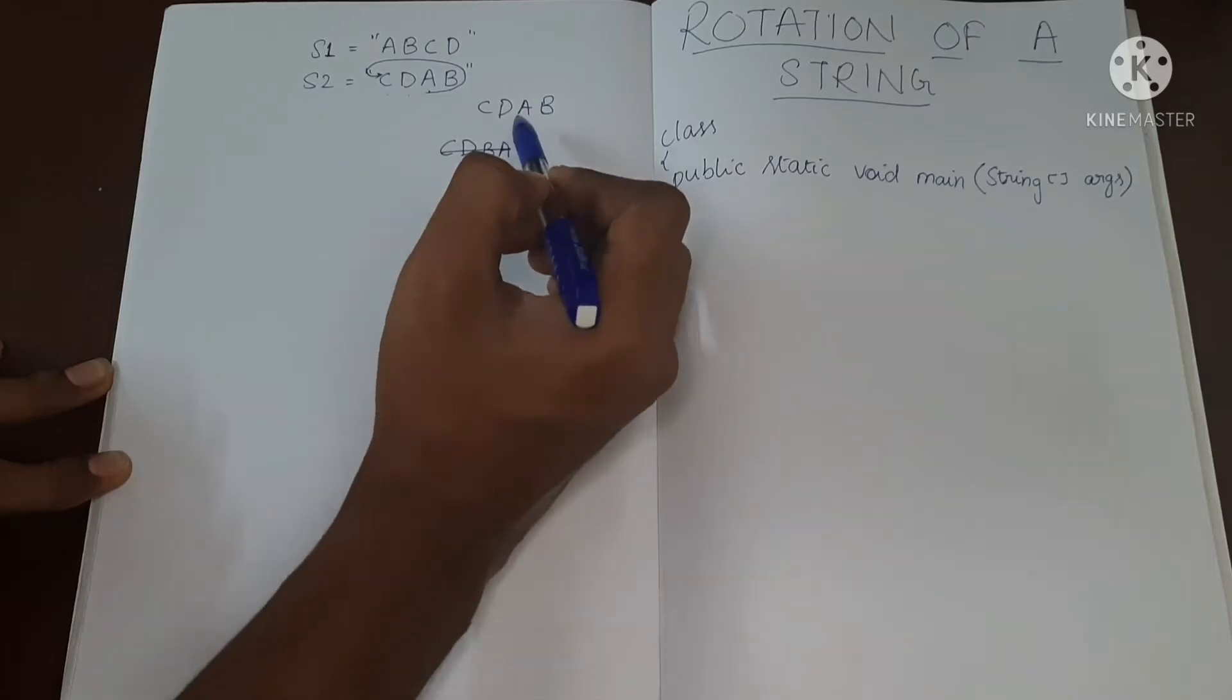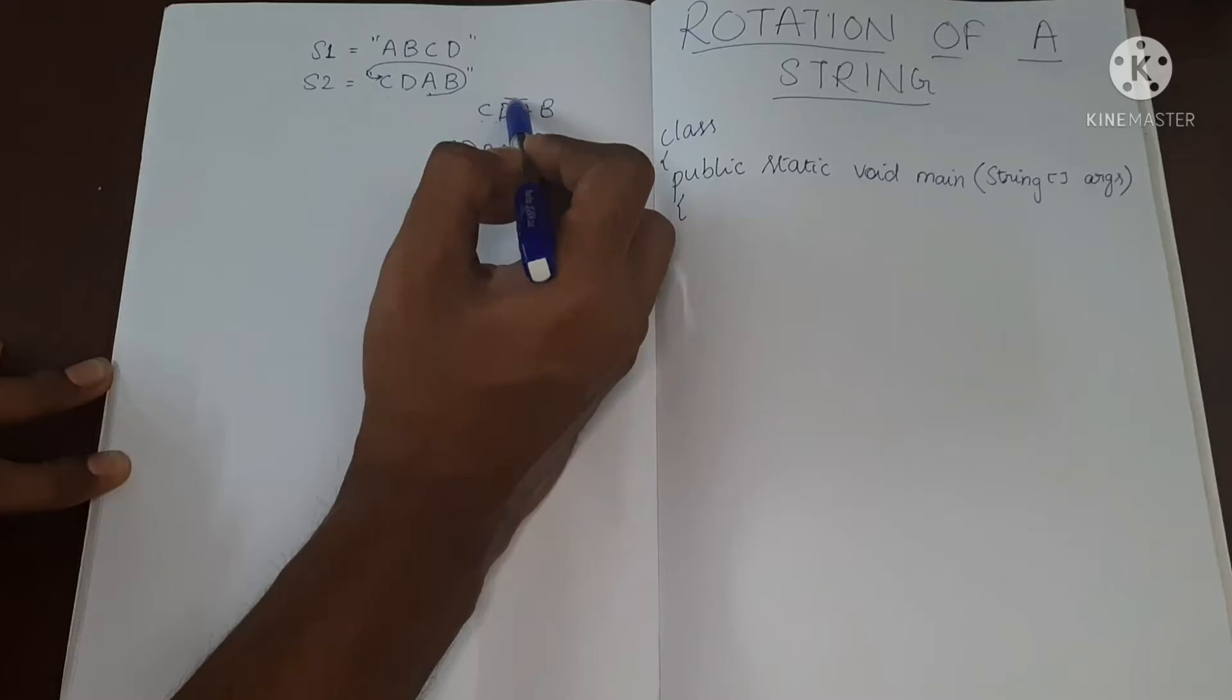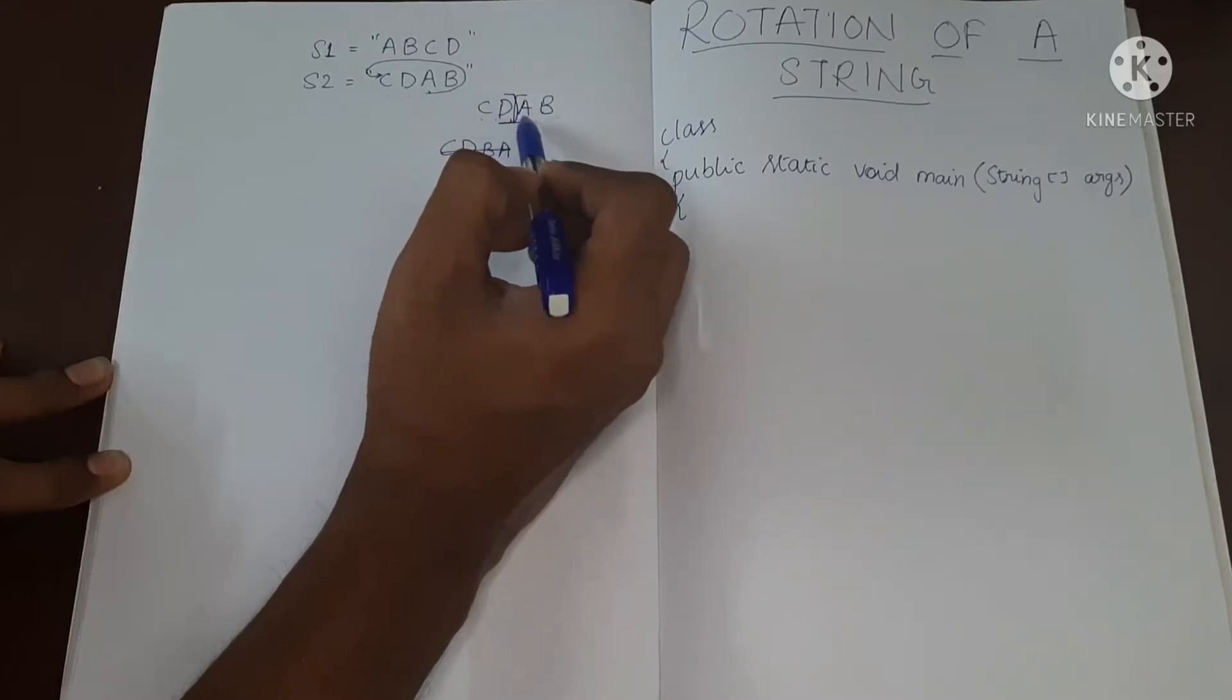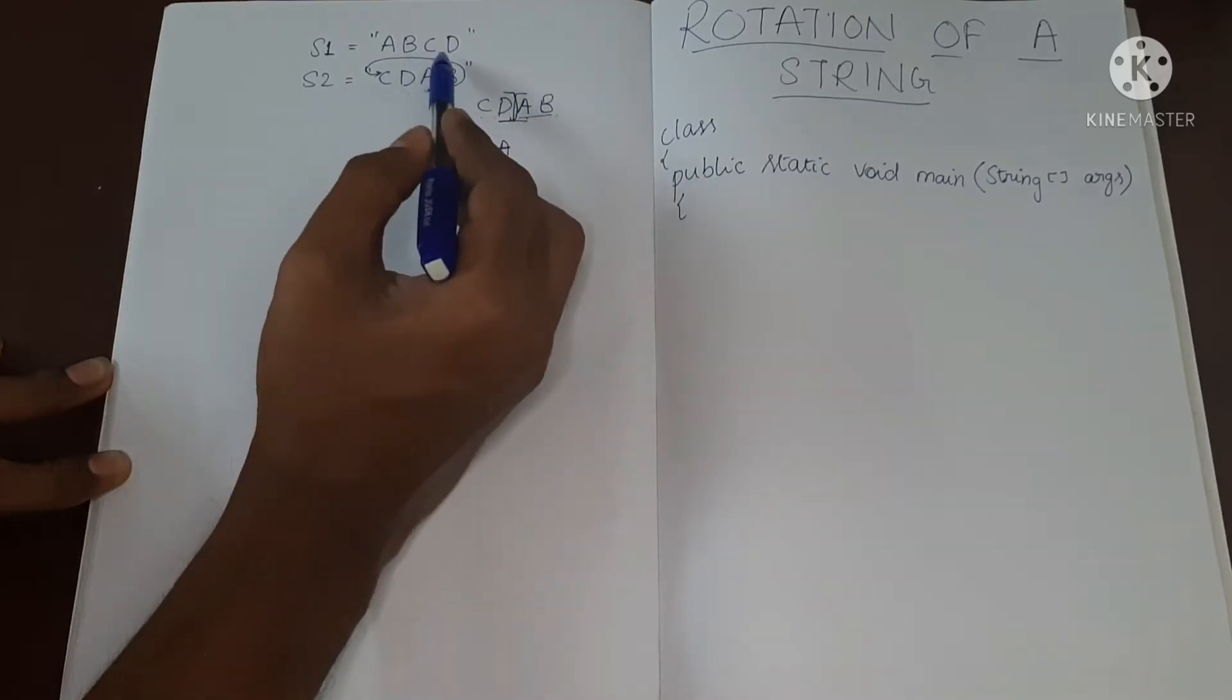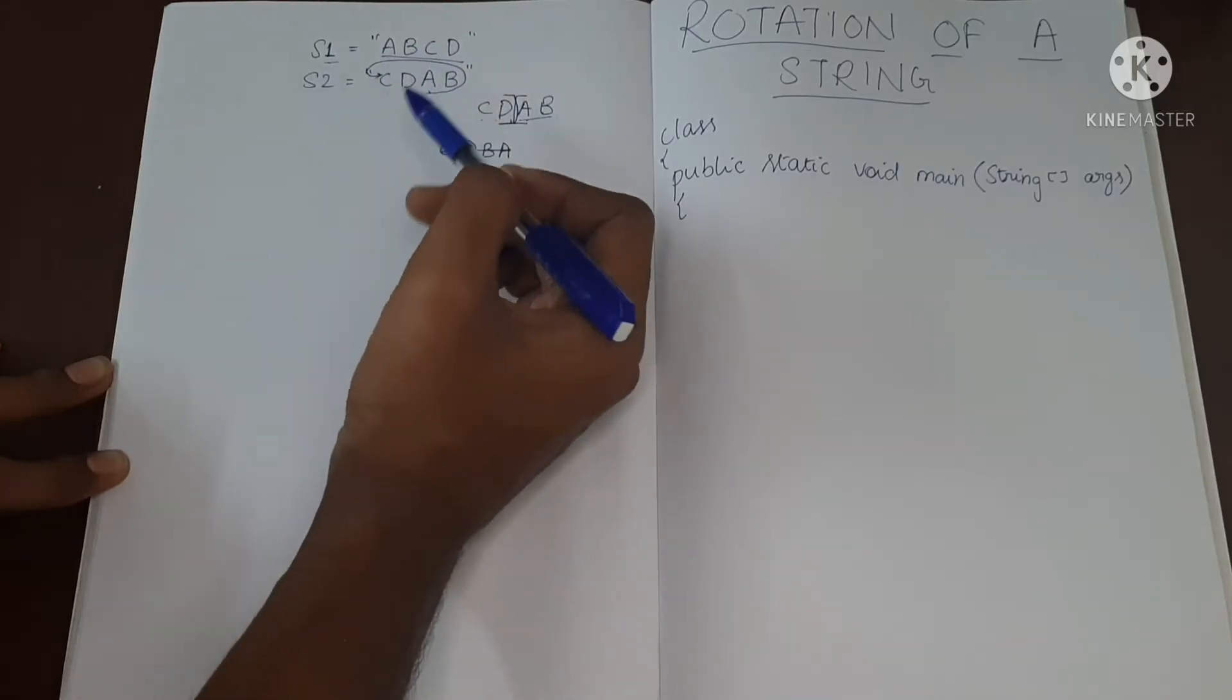So if you see, if you start from here, A, B and then C, D like this. So this is basically a rotated version of this S1. So this is a rotation.